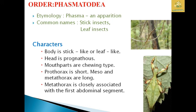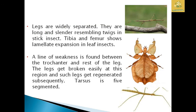The meso- and metathorax are long compared to the prothorax, and the metathorax is closely associated with the first abdominal segment. The legs are widely separated, long, slender, and twig-like in stick insects. The tibia and femur show a lamellate expansion in leaf insects. A line of weakness is found between the trochanter and the rest of the leg; legs break easily here but are regenerated. The tarsus is 5-segmented.